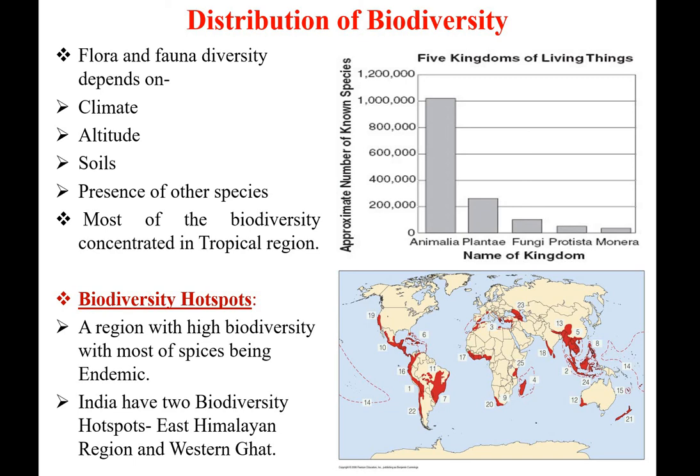Flora and fauna diversity depends upon the climate, altitude, soil, and presence of other species. Most of the biodiversity is concentrated in the tropical region compared with the south and north poles. Flora means flowering plants, and fauna refers to animals.